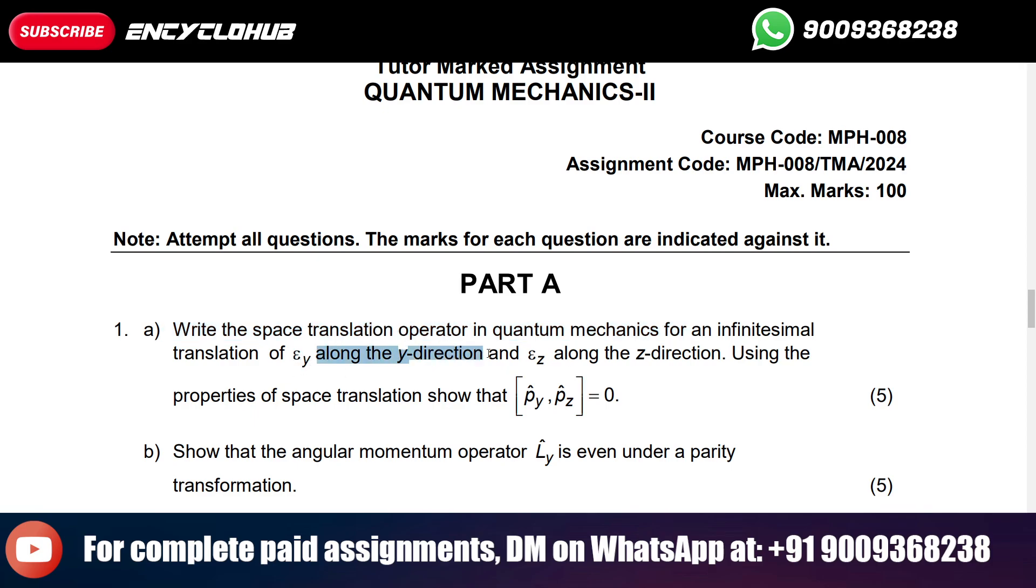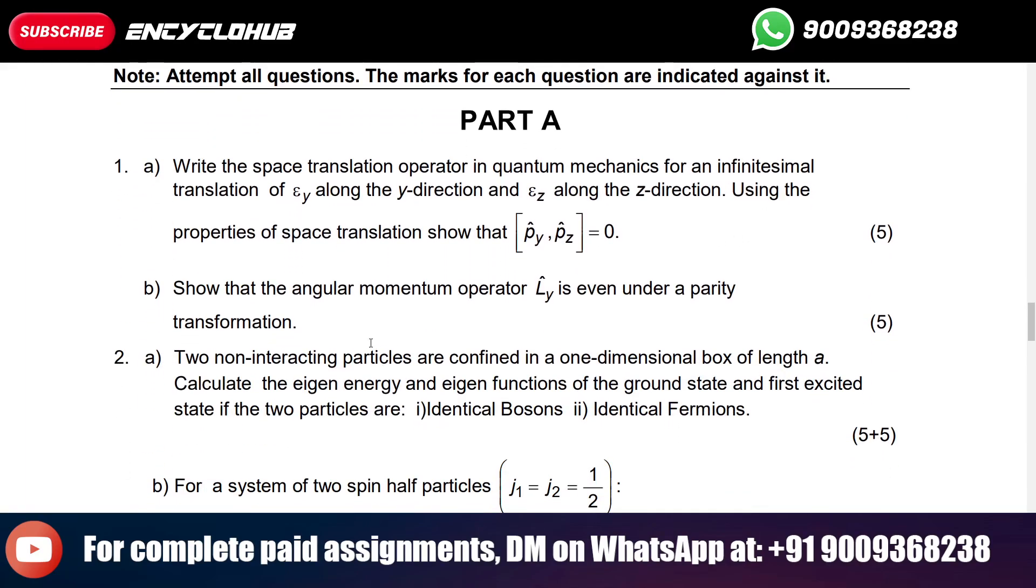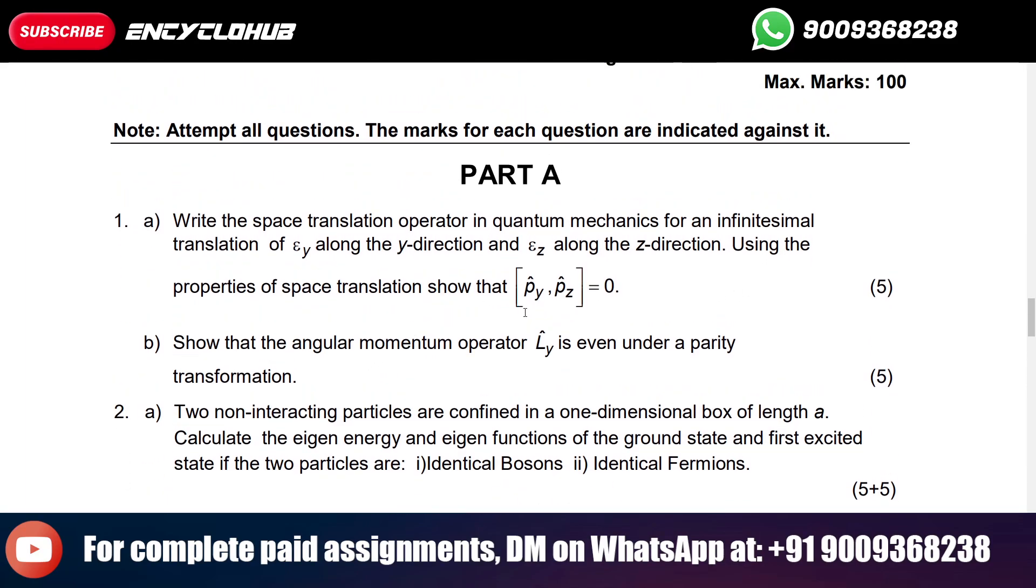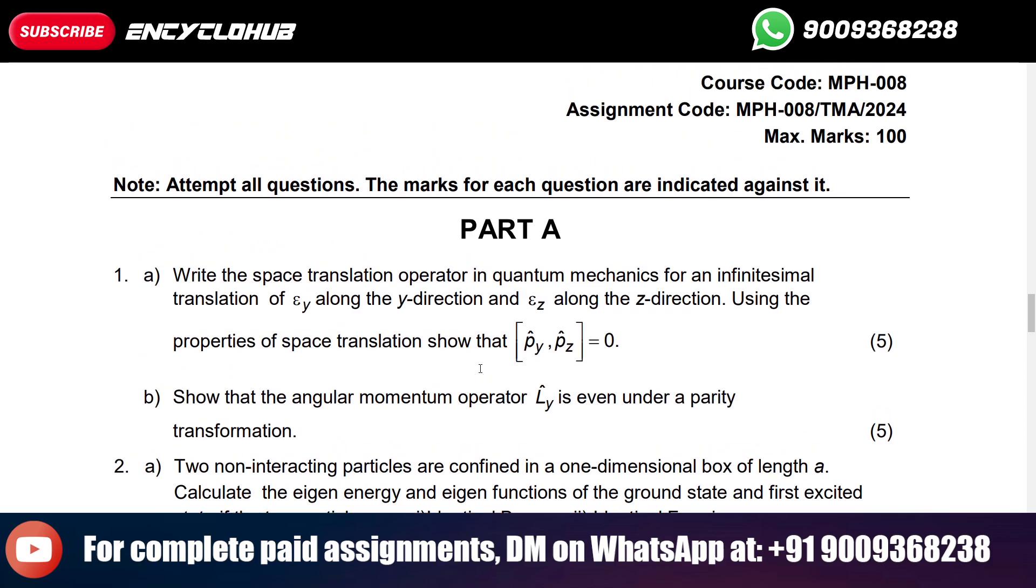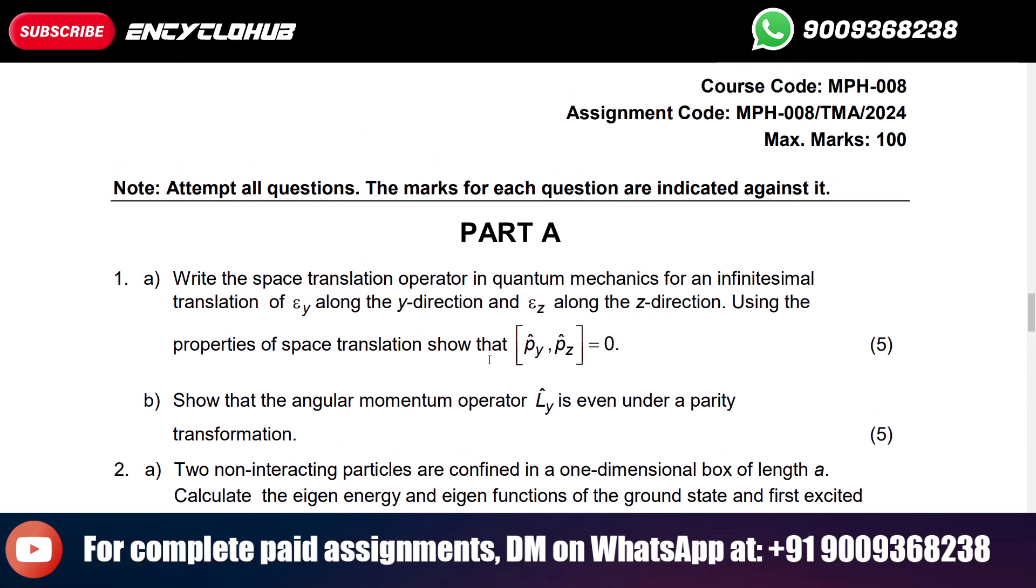Using the properties of space translation, show that [β_y, β_z] = 0. If you want complete solutions of this assignment MPA008, and if you want complete solutions of all MSc Physics assignments, you can contact us.